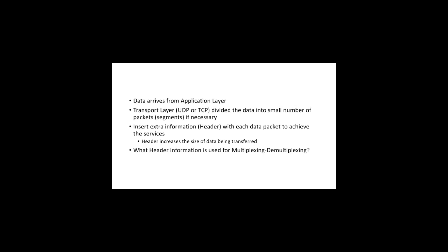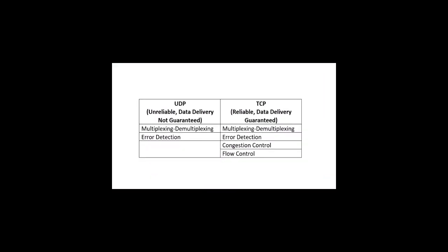One obvious drawback of header information is that it increases the size of the data packets — it is essentially overhead. But we require this header information to achieve those specific tasks. Since we are starting with multiplexing and demultiplexing, let's understand what type of header information is used to achieve this particular task.